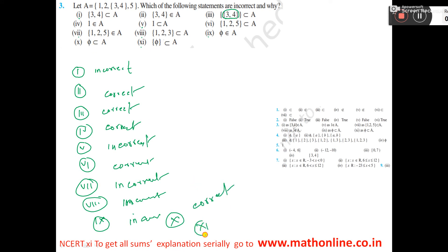Now, number 11: the empty set is a set. But if you give a third bracket here, then it will be one set where inside the set there is one element that is the empty set. But that is not here. The empty set is not inside A. So, how can that be a set element? So, this is also incorrect. That's all.